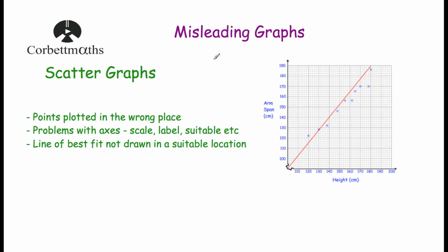Finally, let's look at scatter graphs. Here we've got a scatter graph showing arm span in centimetres on one axis — with a zigzag to show numbers are skipped — going 100, 110, 120, 130 and so on. Height is on the other axis, also with a zigzag, going from 100, 110, 120 and so on. We've drawn our points and line of best fit. Some problems with scatter graphs: the points could be plotted in the wrong place — worthwhile checking if you have the data to verify.